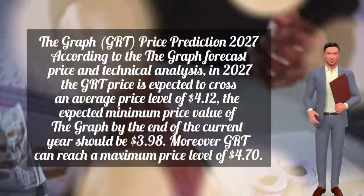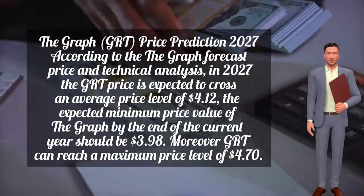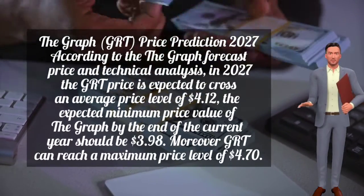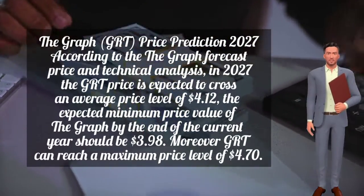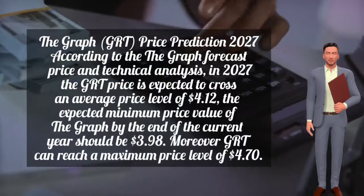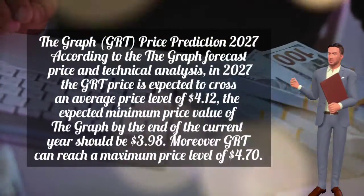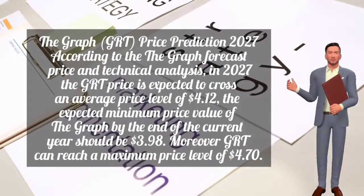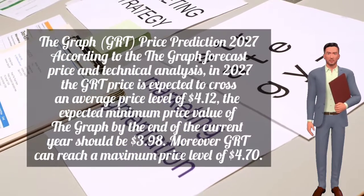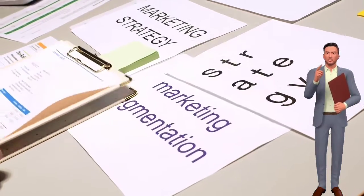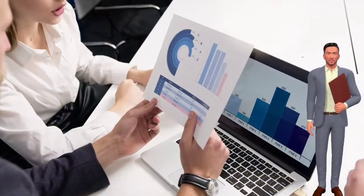The Graph GRT price prediction for 2027: according to the Graph forecast and technical analysis, in 2027 the GRT price is expected to cross an average price level of 4.12 dollars. The expected minimum price value of The Graph by the end of 2027 should be 3.98 dollars. Moreover, GRT can reach a maximum price level of 4.70 dollars.